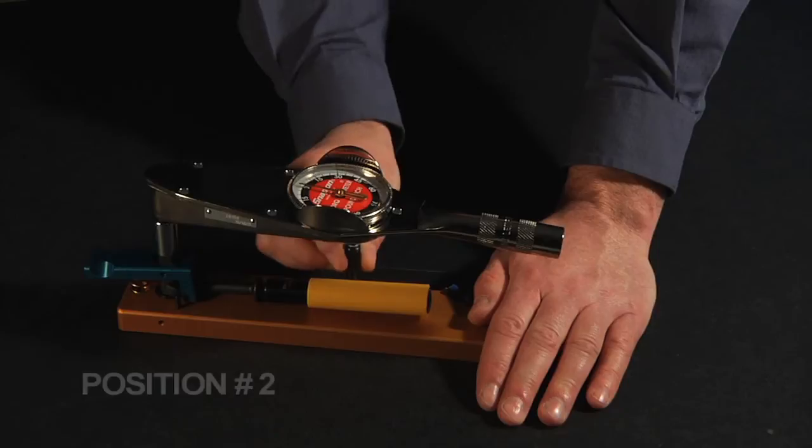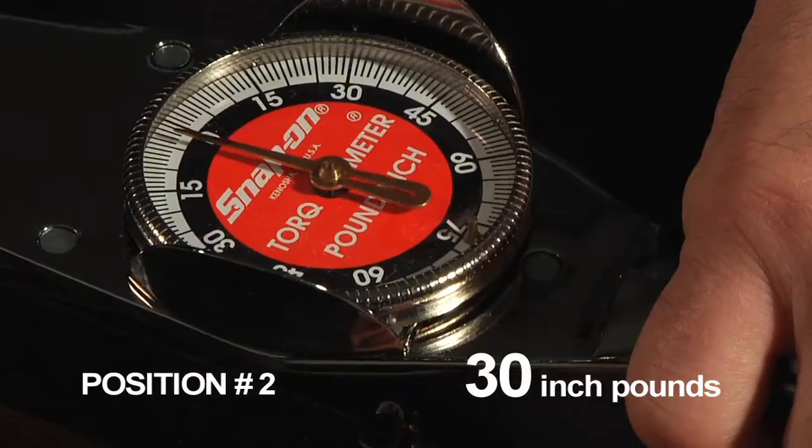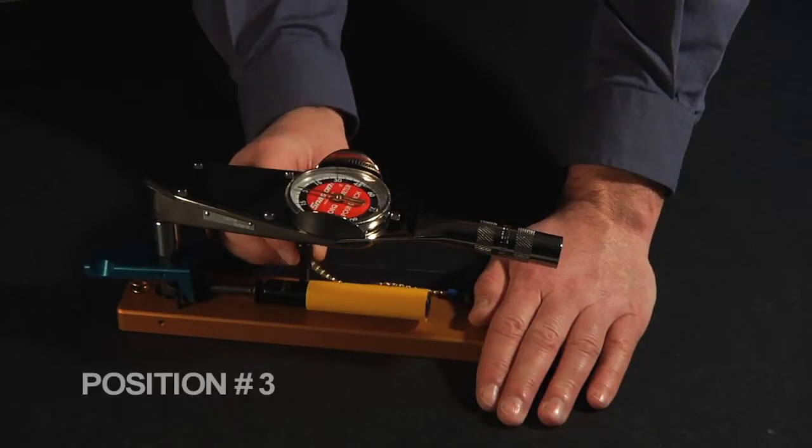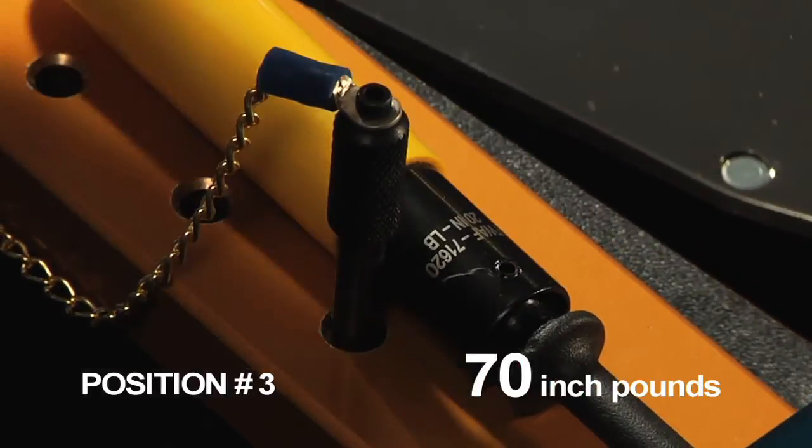When gripped at position two, a torque of 30 inch-pounds is exerted. And when gripped at the third position, a torque of 70 inch-pounds is exerted on the F-connector.